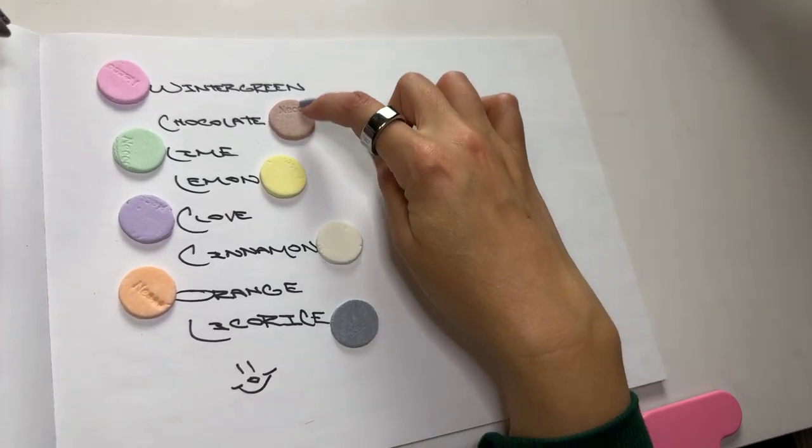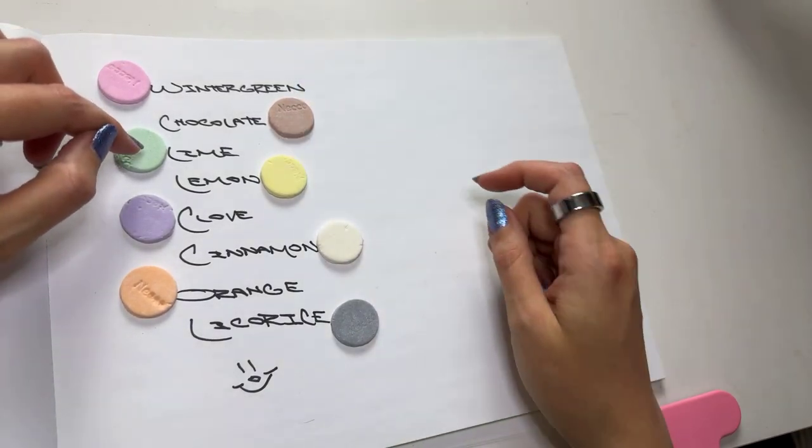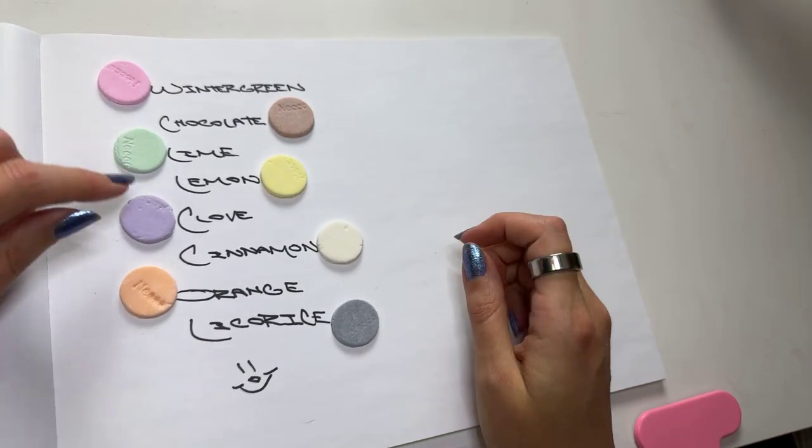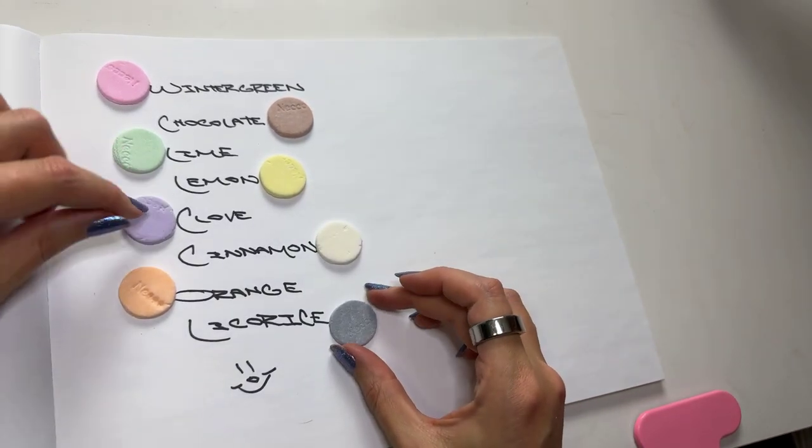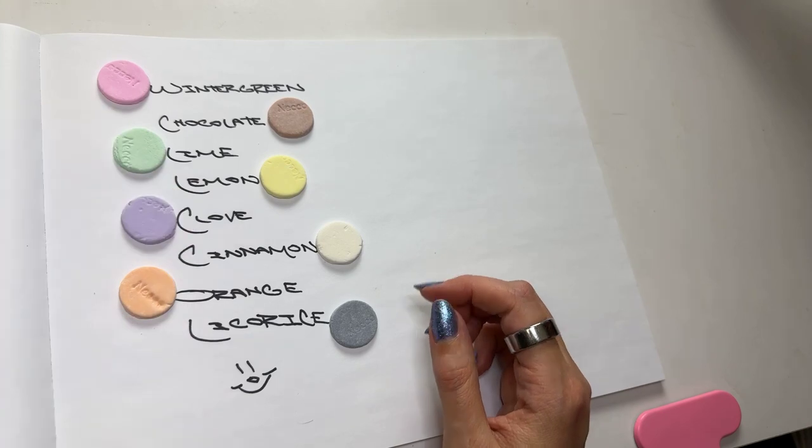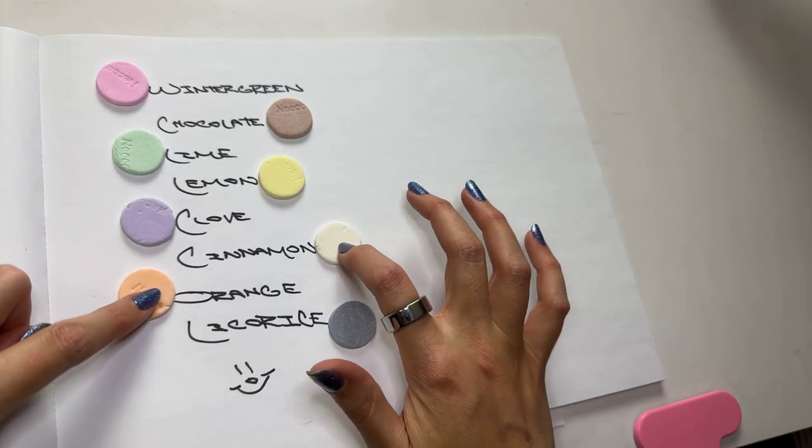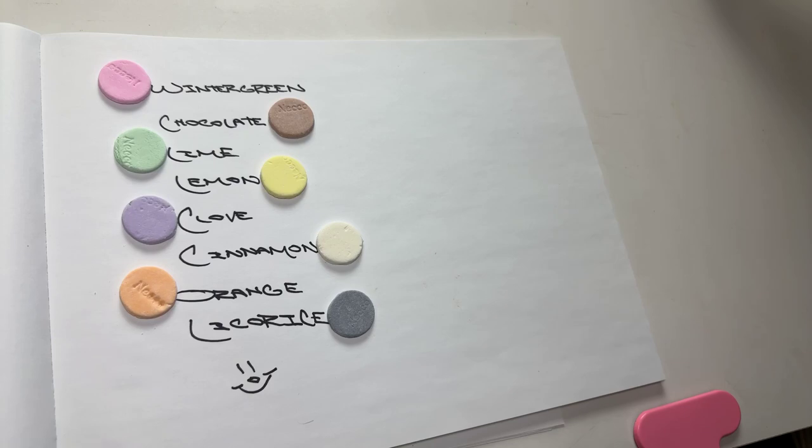The pink one is wintergreen, the brown one here is chocolate, green is lime, yellow is lemon, there's two purple-y looking ones, but the lighter purple one is the clove, white is cinnamon, orange is orange, and the darker purple one is licorice.